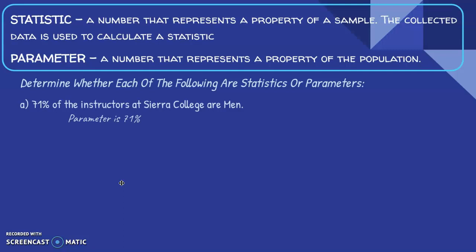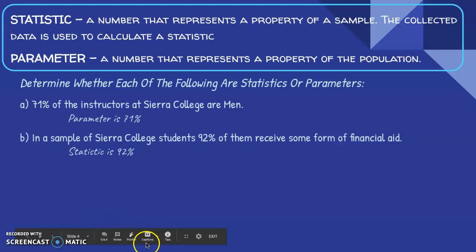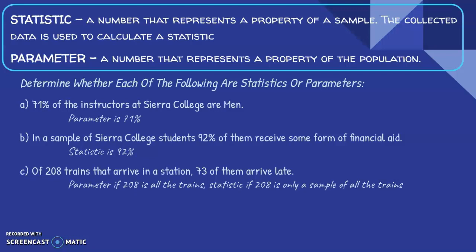In a sample of Sierra College students, 92% of them receive some form of financial aid. Is this a parameter or a statistic? It's a statistic because it tells us in the statement that we have a sample. Of 208 trains that arrive in a station, 73 of them arrive late. Is this a parameter or a statistic? This one we could argue because I'm leaning toward parameter because we're going to assume that 208 is all of the trains that come into a station and 73 of those trains arrive late. But if 208 happened to be a sample, then we would call this 73 out of 208 fraction or percentage a statistic. But going with 208 being all of the trains, I would say this proportion is a parameter.